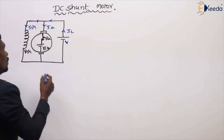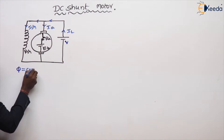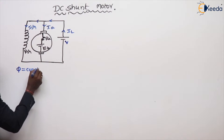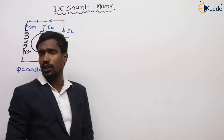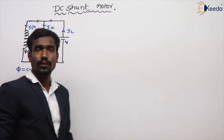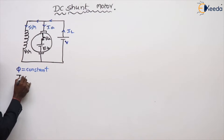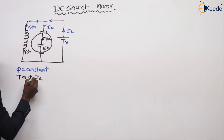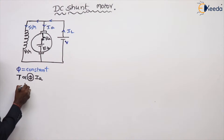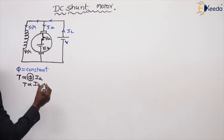Even though the load changes, the flux is exactly constant. DC shunt machines are constant flux machines. From this, we know torque is directly proportional to φ into IA. But where the flux is constant, torque is directly proportional to IA — that is the first relationship.